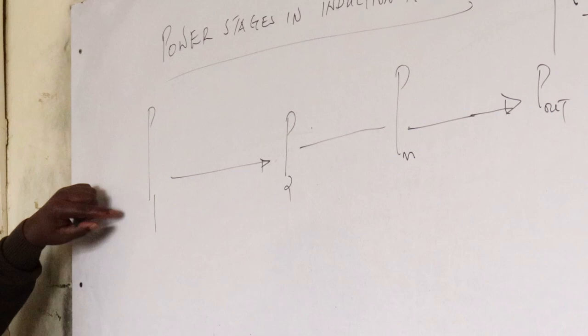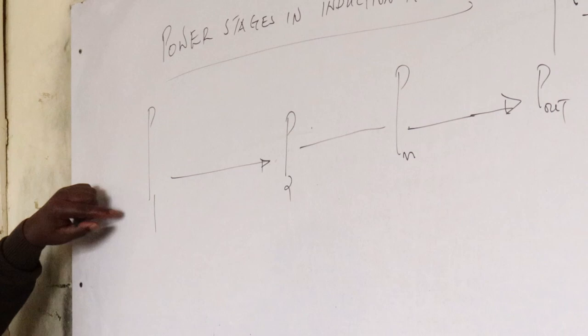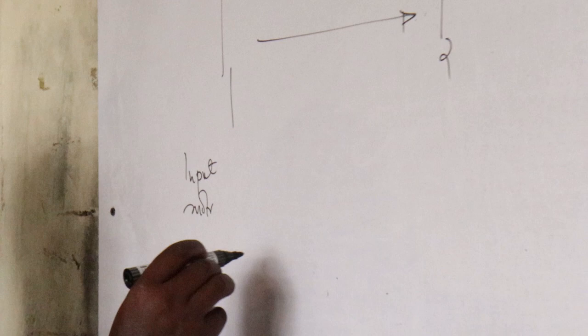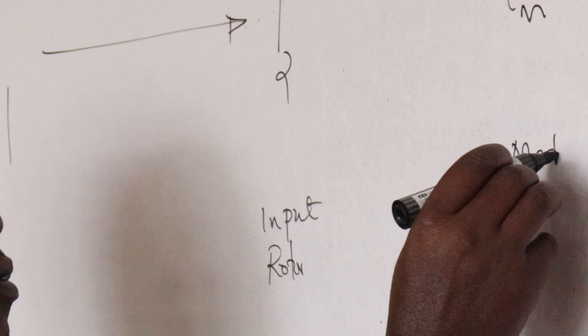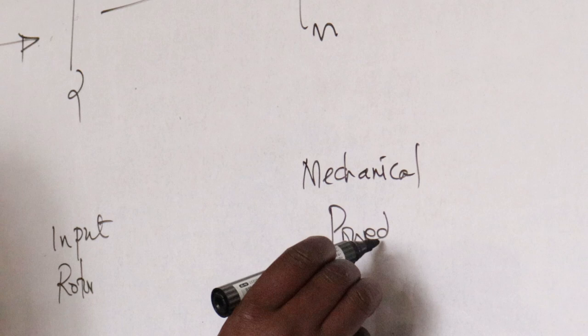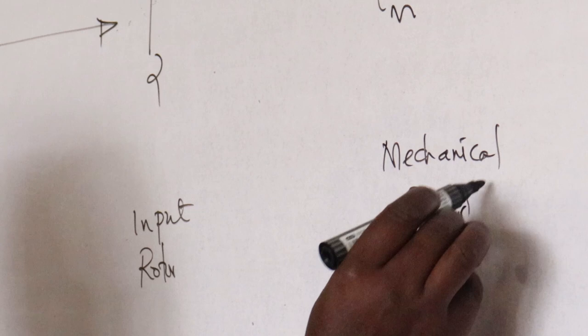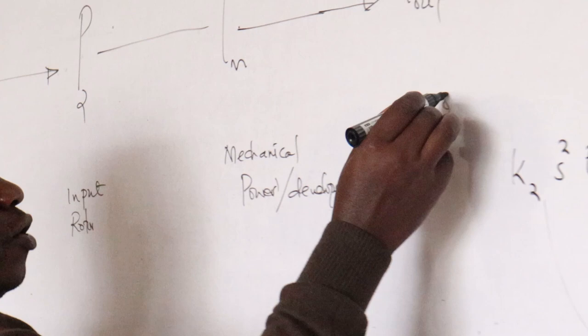This is the input to the motor, then we have what you call the rotor input. Then we have mechanical power, also called power developed. Then we have the output power.